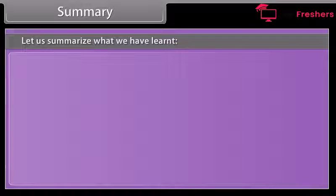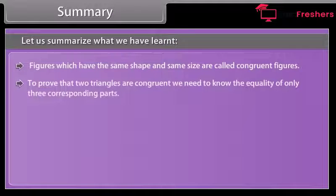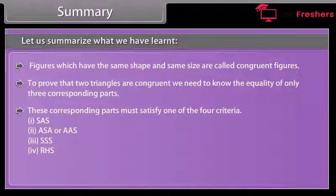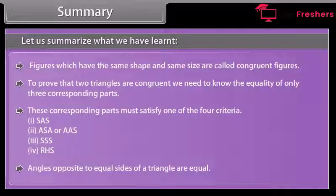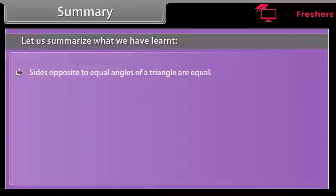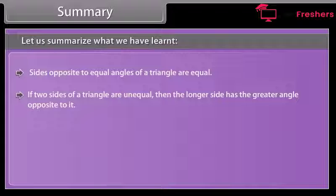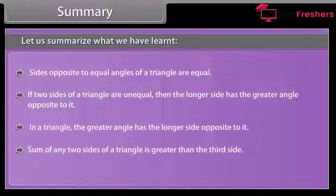Summary: Figures which have the same shape and same size are called congruent figures. To prove that two triangles are congruent, we need equality of only three corresponding parts satisfying one of four criteria: (1) SAS, (2) ASA or AAS, (3) SSS, (4) RHS. Angles opposite to equal sides of a triangle are equal; sides opposite to equal angles are equal. If two sides of a triangle are unequal, the longer side has the greater angle opposite to it, and vice versa. The sum of any two sides of a triangle is greater than the third side.